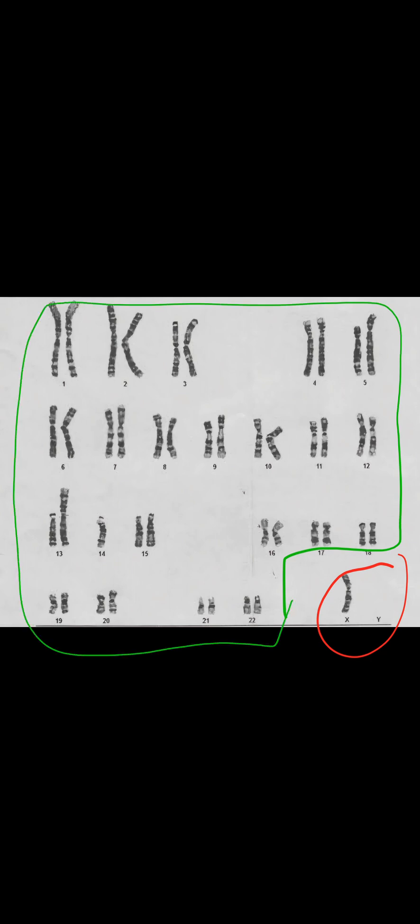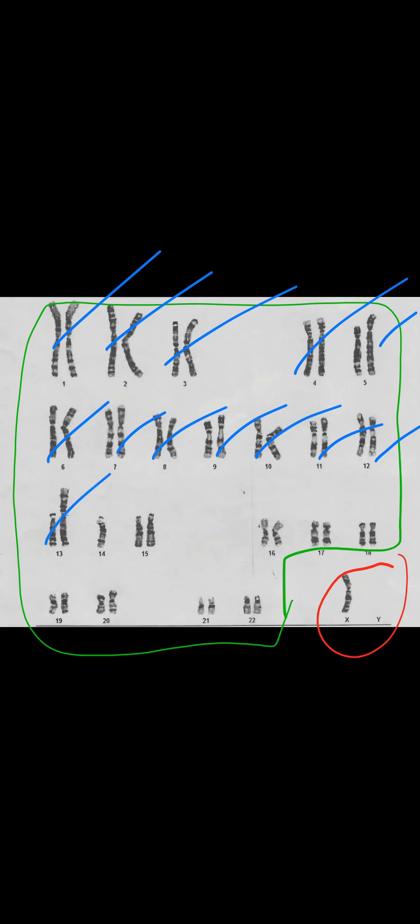Moving to the next sample, these are the sex chromosomes and these are the autosomes. Analyzing the autosomes — all are normal, symmetrical, and in pairs. Coming to the sex chromosomes, the patient has an X chromosome but the Y chromosome is missing. The patient has only a single X chromosome with a total of 45 chromosomes. This is basically Turner syndrome, with genotype 45,X0.